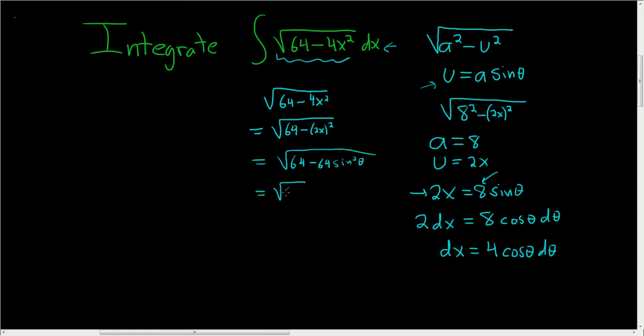Factoring out a 64, we get the square root of 64. And then we get the square root of 1 minus sine squared. 1 minus sine squared is cosine squared. So this is 8 square root cosine squared. And this is 8 cosine theta.